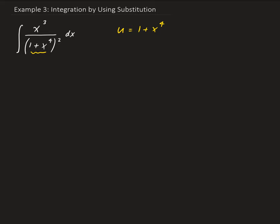So then from here we can go ahead and take the derivative of u with respect to x. That's going to give us 4x cubed, and this is equivalent to du equal to 4x cubed times dx.